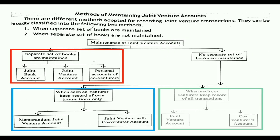There are different methods adopted for recording joint venture transactions, broadly classified into two methods. First, when separate set of books are maintained — under this, three ledger accounts are prepared: joint bank account, joint venture account, and personal account of co-ventures. Second, when separate set of books are not maintained — under this there are two sub-categories.